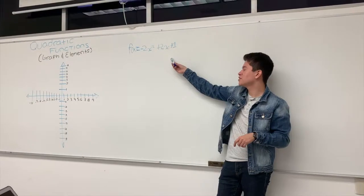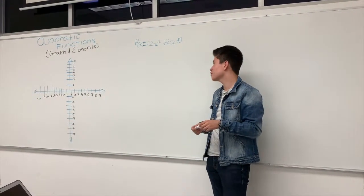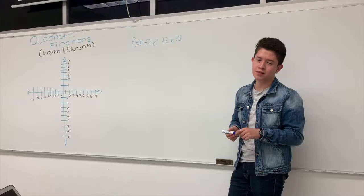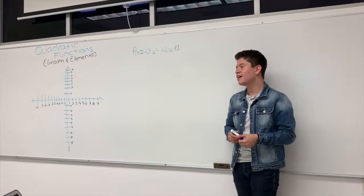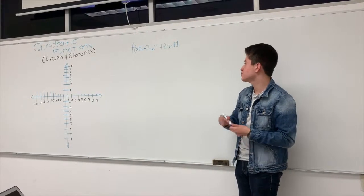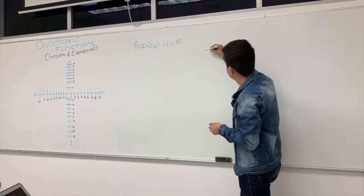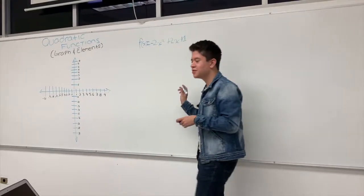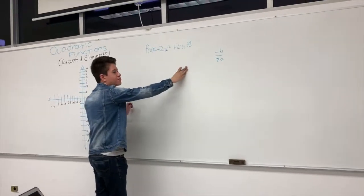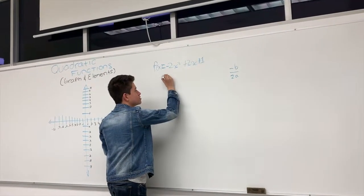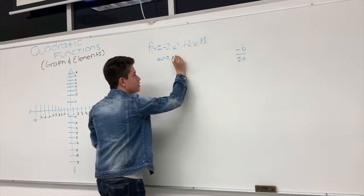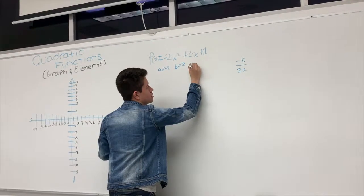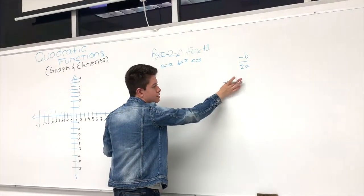This is a quadratic function and we're going to graph it. But to graph it, we need to find the vertex formula. To find the vertex formula, first we need to find the x-axis of the vertex using the formula negative b over 2a. From the function, a equals negative 2, b equals 2, and c equals 1.